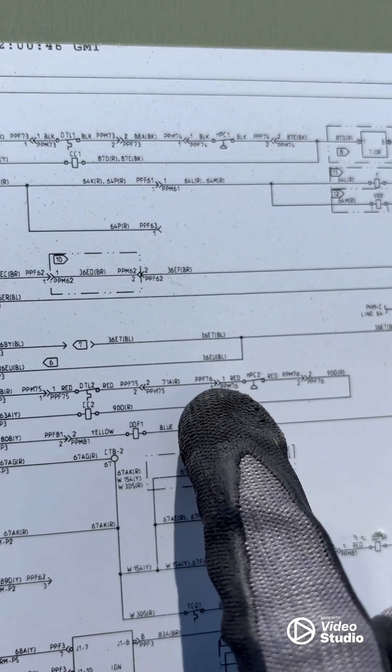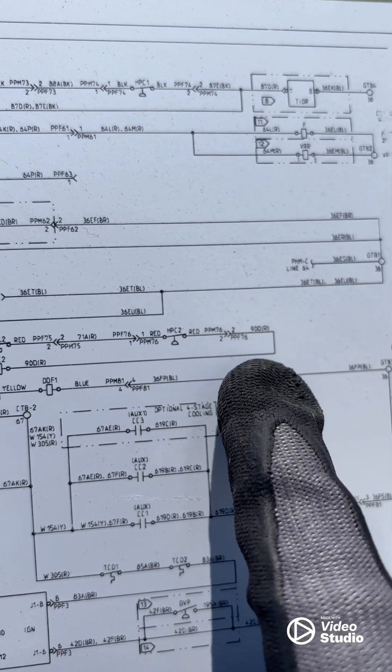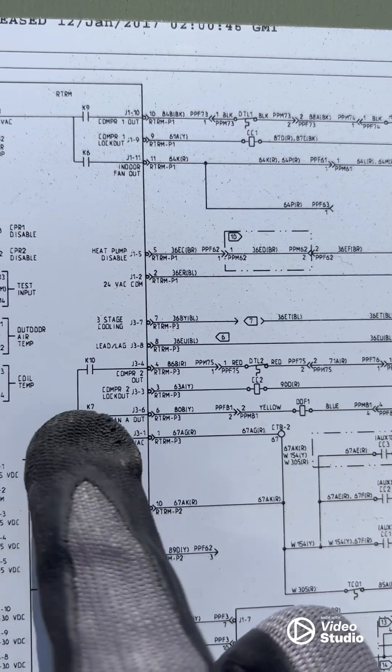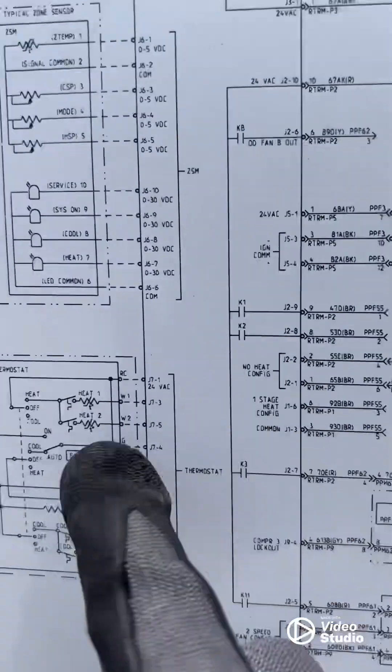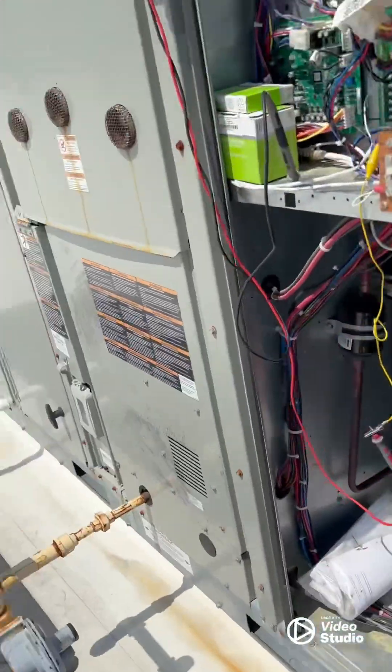It goes through the discharge line temperature, high pressure cutout, comes back one side of the coil energized, the other side of the coil energized, and the compressor on.